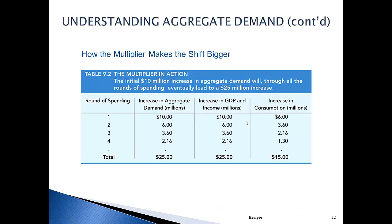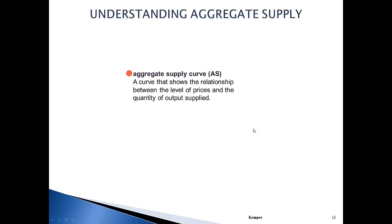How the multiplier makes the shift bigger: this is a simple table showing what happens to the increase in GDP and consumption as we increase aggregate demand. You don't need to know the equation for the multiplier. Now let's look at the aggregate supply curve — a curve that shows the relationship between the level of prices and quantity of output supplied.